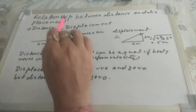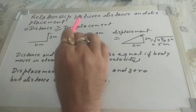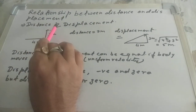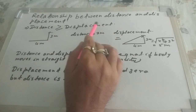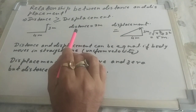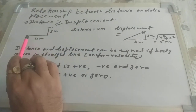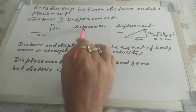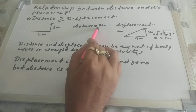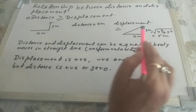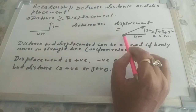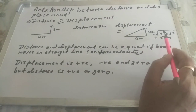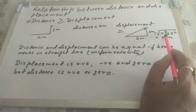In this video we will start from the relationship between distance and displacement. Distance can be either greater than or equal to displacement. For example, suppose a body moves 4 meters and then turns left and moves 3 meters. The distance in this case will be 4 plus 3, which is 7 meters. The displacement is the shortest path — the diagonal — and by applying the Pythagorean theorem it becomes the square root of 4 squared plus 3 squared.